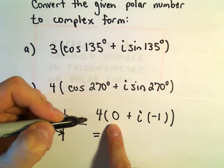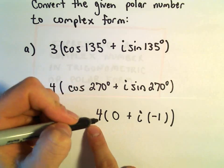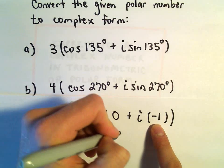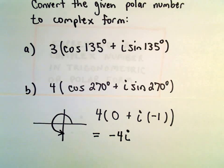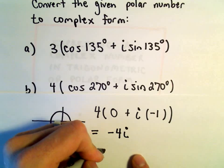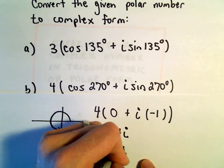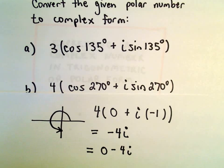Well, if we distribute 4 times 0, we'll get 0. A positive 4 times a negative 1 will be negative 4i. So, typically, we'll just write it as negative 4i. We could write it as 0 minus 4i, if you also want to see the real part.